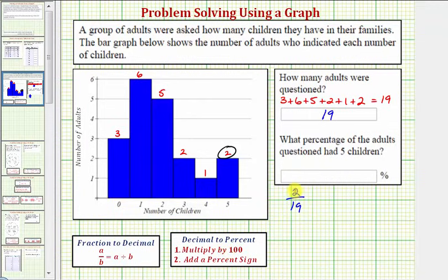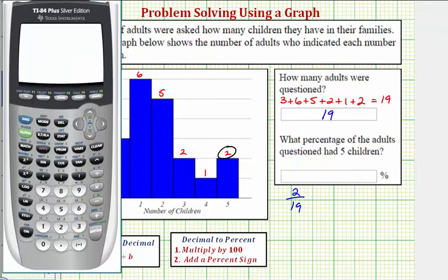To convert the fraction to a decimal, we want to divide two by nineteen. So using the calculator, notice that two divided by nineteen, if we round to three decimal places, it would be approximately zero point one zero five.